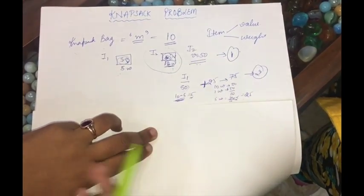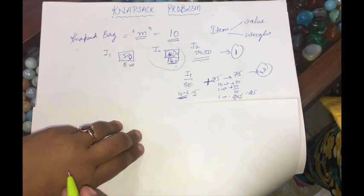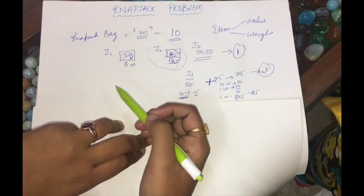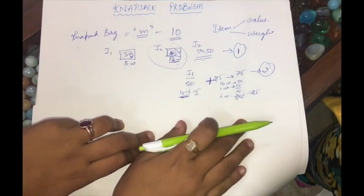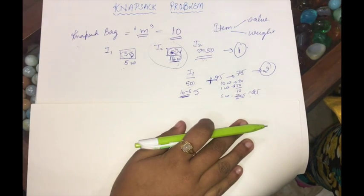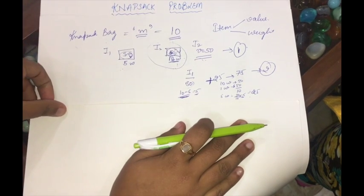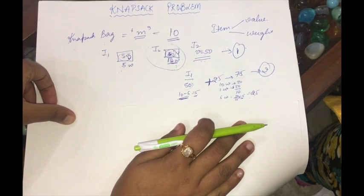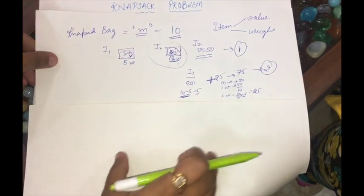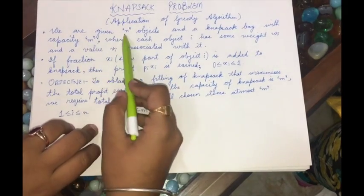With only two items it was easy to recognize the best choice. But if I have 50 or 100 items, it becomes very difficult to decide in which order to pick them. For this we have an algorithm known as the knapsack problem algorithm, which we will now see technically.